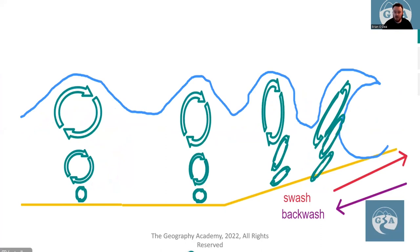When the wave breaks on the shore, it's called swash moving up the beach. When it comes back down, it moves as backwash down the beach. Swash is more dictated by the direction of the waves from the wind, while backwash just follows gravity in a straight line back.